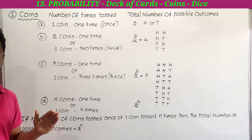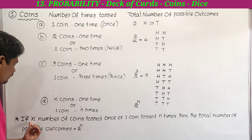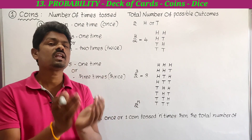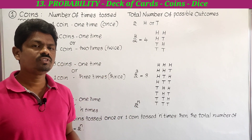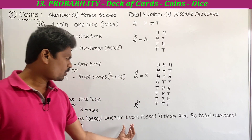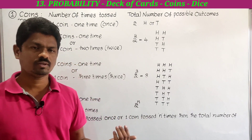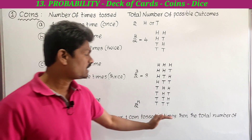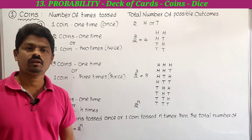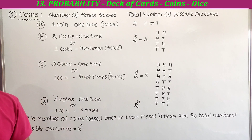If n number of coins are tossed once, it is the same as one coin tossed n times — both are the same experiments. In both cases, the total number of possible outcomes equals 2 to the power n. This is the formula we have to remember to find the total number of possible outcomes.